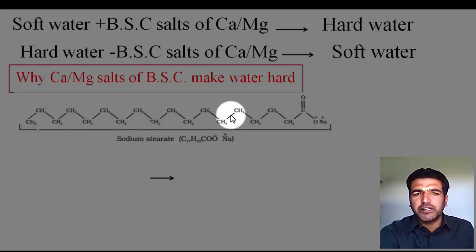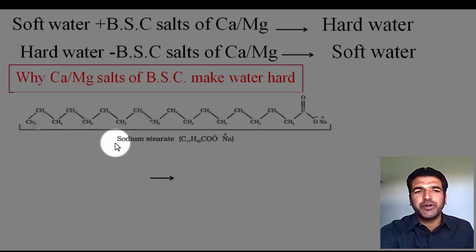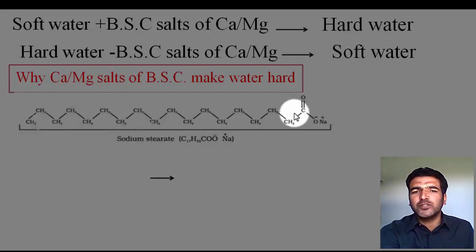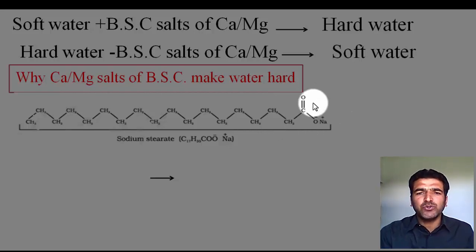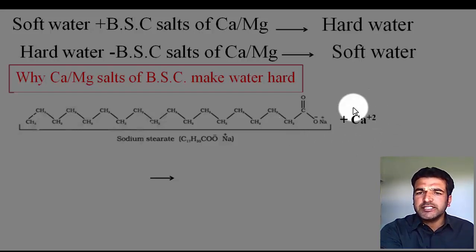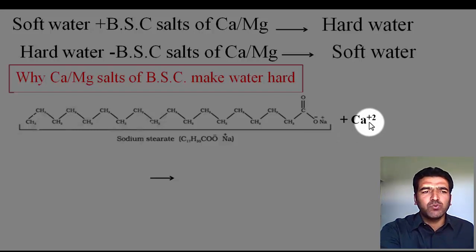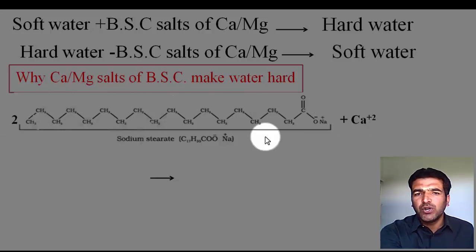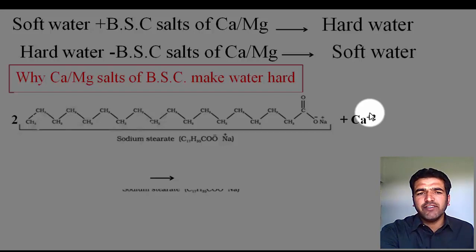The reason relates to the soap molecule. Its formula is C17H35COO·Na — sodium stearate. The soap molecule has a long chain with one polar group at the end, and soap is water soluble — it gets dissolved in water. Once we add soap to hard water, which contains calcium or magnesium salts, the calcium ions replace the sodium ions. Since calcium is bivalent, we need two molecules of soap — so two soap molecules combine with one calcium ion from the hard water.